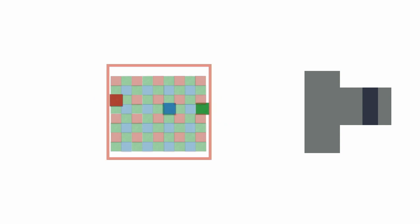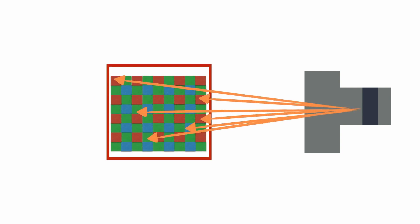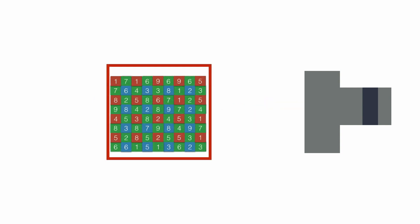The sensor has photo sites that measure the power of light hitting it and record the value to reproduce color. There are three types of photo sites: red, green, and blue. When light hits the sensor, each photo site records the power of light hitting it.